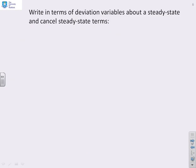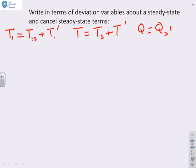What do we do next then? Next, we want to write the expression in terms of deviation variables. So let's write what the deviation variables are. We've got things like T_i equals T_is plus T_i dash. We've got T equals T_s plus T dash and Q equals Q_s plus Q dash. So we're writing the variables as their steady state plus a deviation about that steady state.